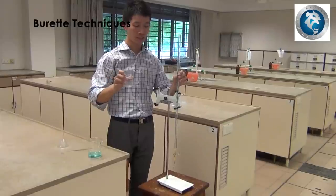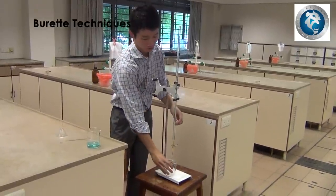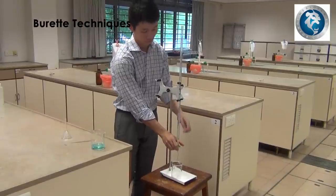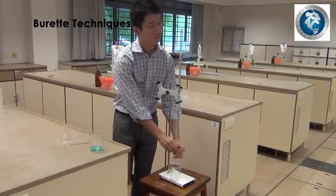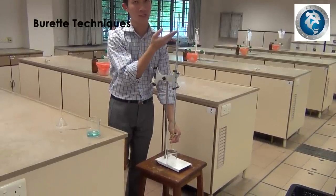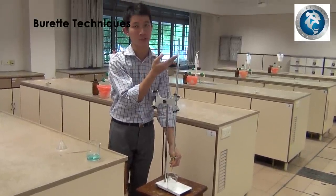Now, position the waste beaker at the bottom of the burette. Open the clip to empty the solution until a marking that you are comfortable to start the titration with.